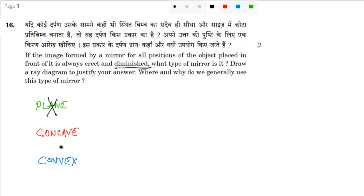Now if you talk about concave mirror, there is only one possibility when you will get an erect image. When your object - this is your concave mirror and this is your principal axis, this is your focus, this is pole, this is center of curvature.